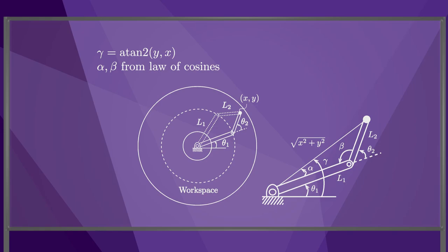With these, the two solutions to the inverse kinematics for points in the interior of the workspace are shown here. The book discusses other examples of inverse kinematics, particularly for robots with six joints, and the atan2 function and law of cosines are useful in those examples too.